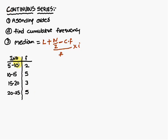The data is already in ascending order, therefore there is no need to rewrite it in ascending order. The first point is over. The next point is find out the cumulative frequency. So we have to construct a new column for the cumulative frequency.